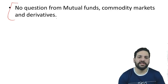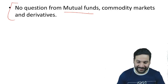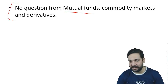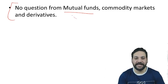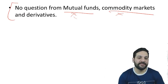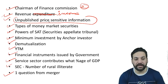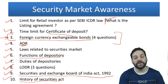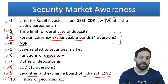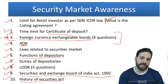Another surprise: there was no question from Mutual Fund — I did six lectures on Mutual Fund. This is a lesson for me: if I'm interested in a topic, that doesn't mean I should make dozens of chapters on it. Similarly, Commodity Markets and Derivatives — I did six lectures on each of these topics, but there were no questions. Apart from Foreign Currency Exchangeable Bonds, whatever topics are in my course, students would be familiar with all the questions.